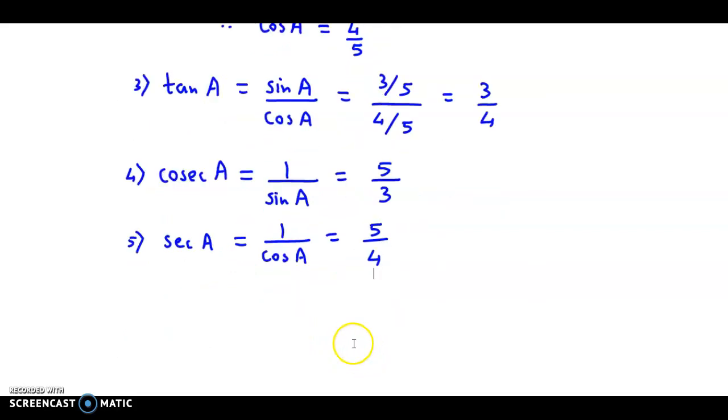And lastly, we could easily obtain cot A. Cot A is nothing but 1 over tan A, that is reciprocal of tan A. The value for tan A is 3 by 4. So, cot A would be 4 by 3.